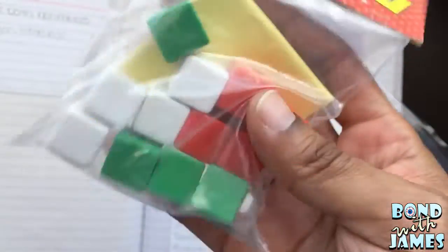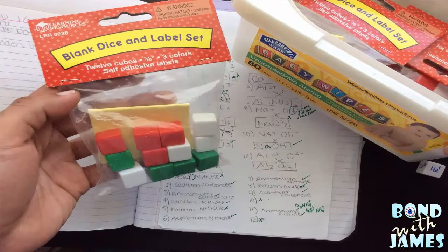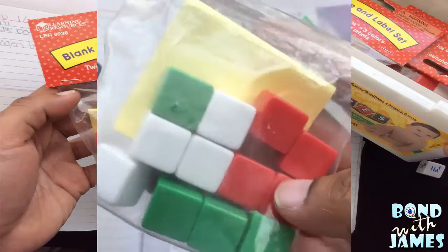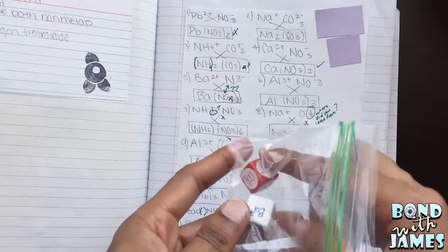However, technically you don't need to use this set of dice. You can use any material for your class that will allow you to engage your students in a hands-on activity in regard to naming ionic compounds and actually writing formulas for ionic compounds.